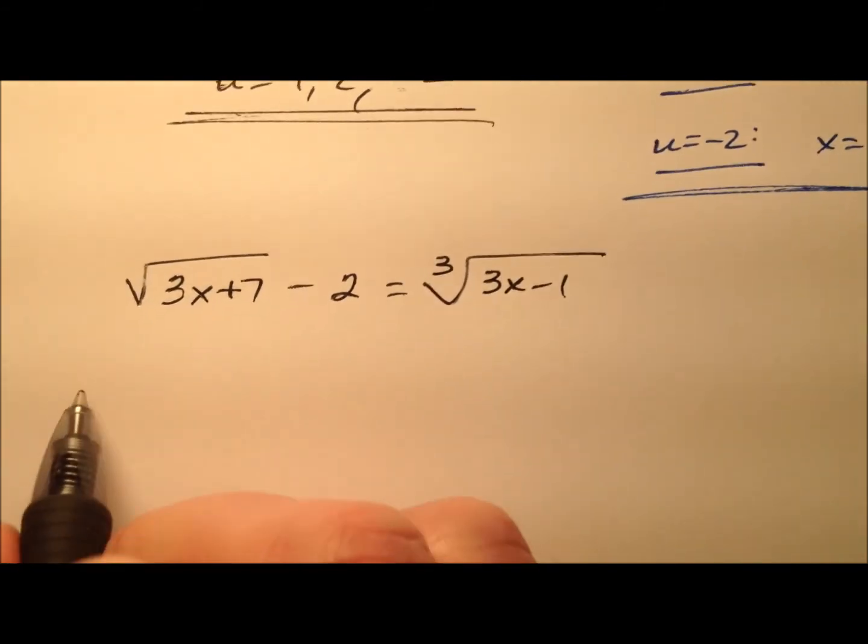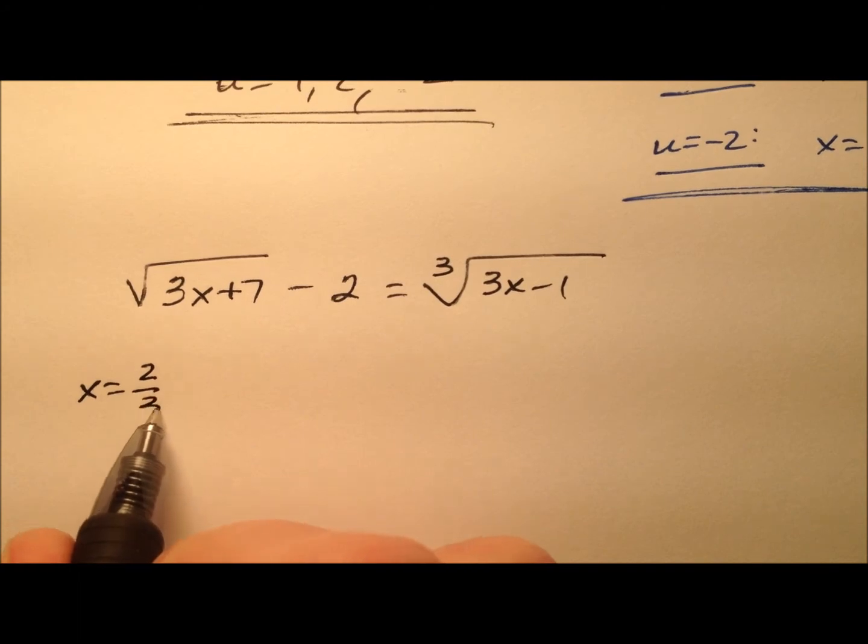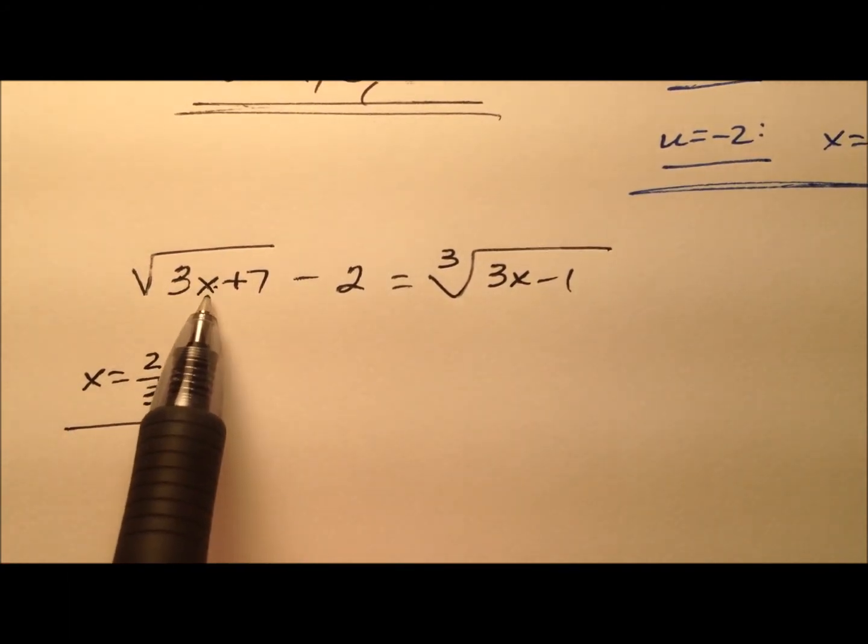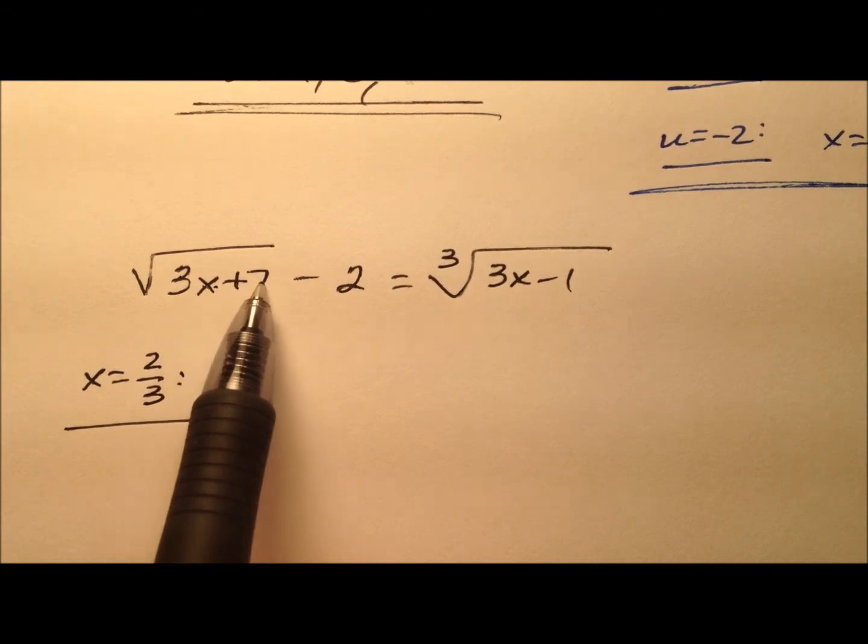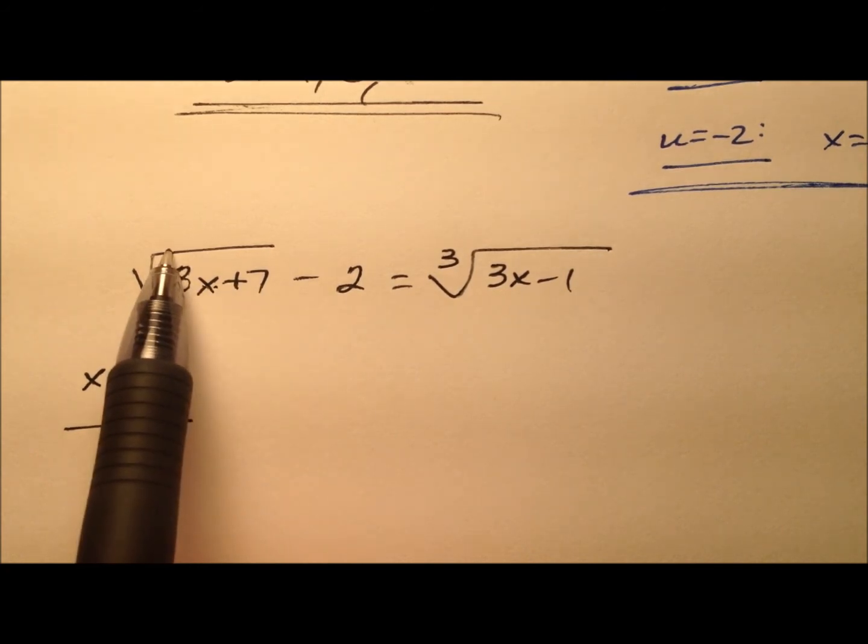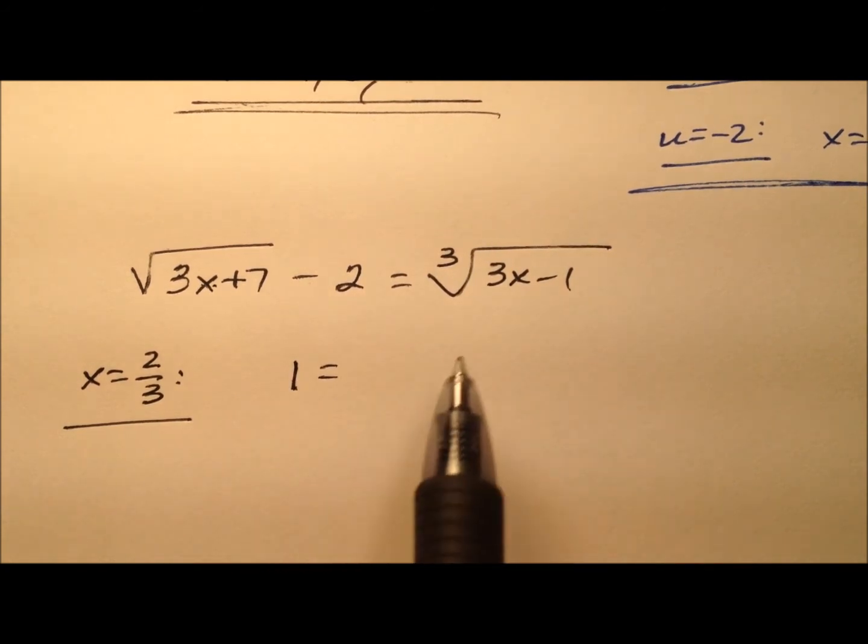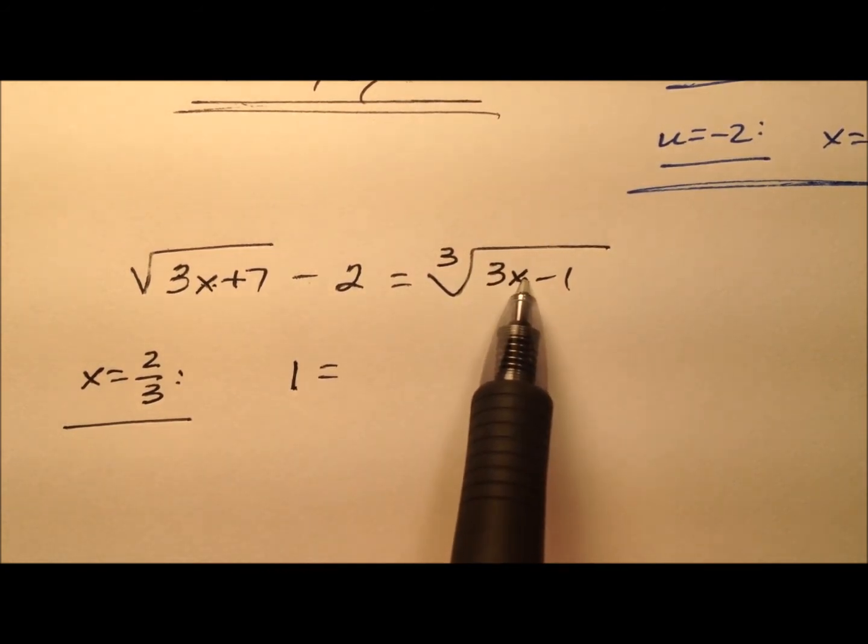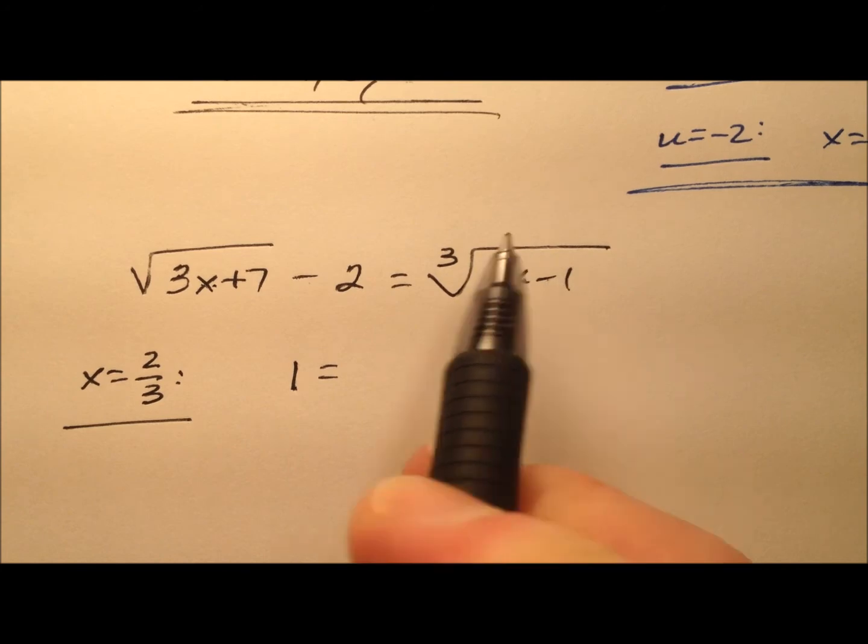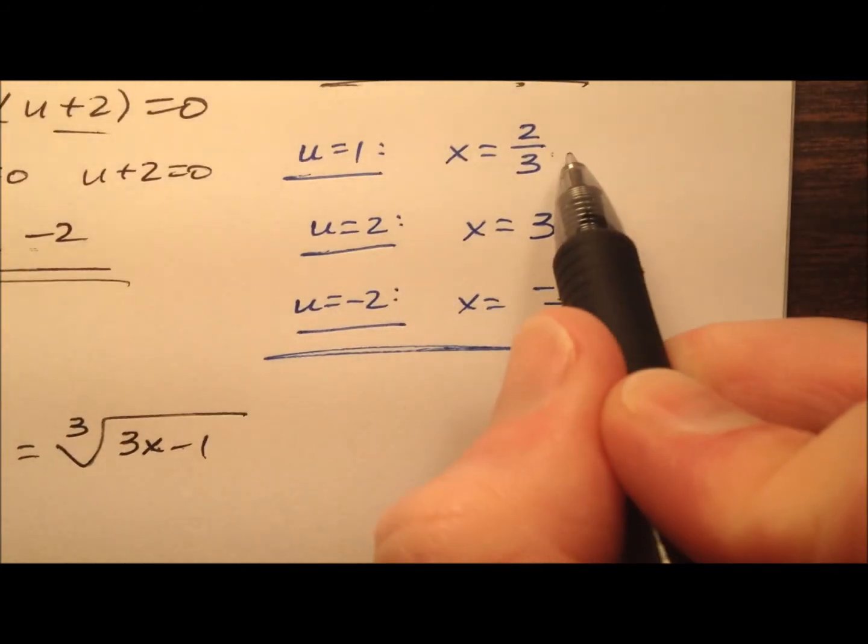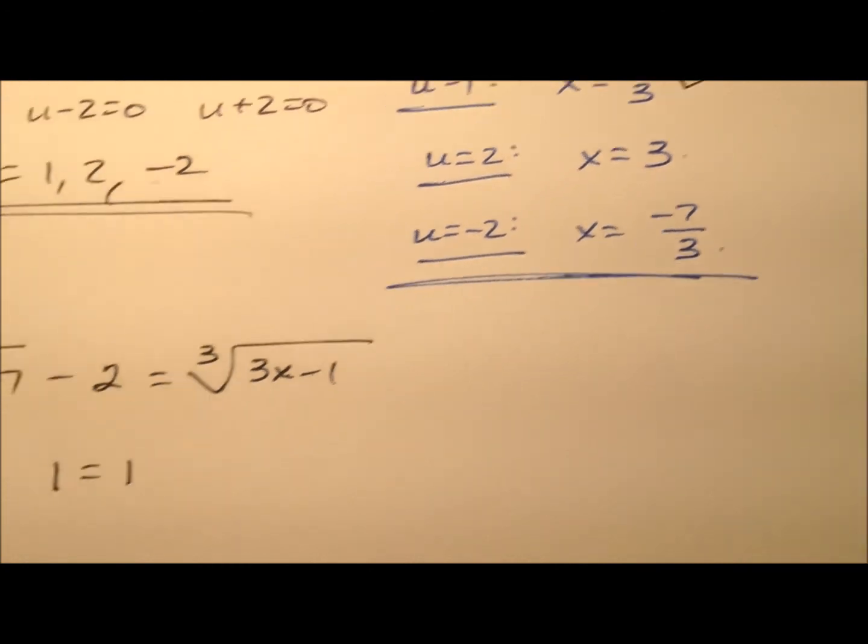So let's go one at a time. So we'll try x equals 2 thirds first. So 3 times 2 thirds is 2. 2 plus 7 is 9. Square root is 3. 3 minus 2 is 1. Okay, so we have a 1 on that left side. 3 times 2 thirds, still 2. 2 minus 1 is 1. Cube root is 1. So we see that x equals 2 thirds is indeed a solution. It works.